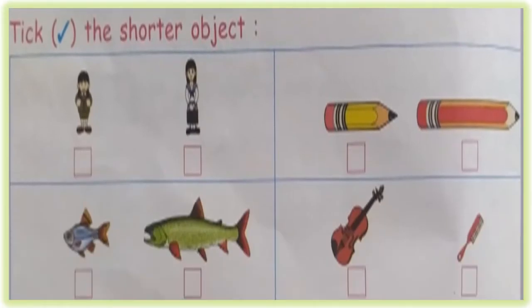Take the shorter object. See the picture. First one, who is shorter? Boy or girl? Boy is shorter than the girl.